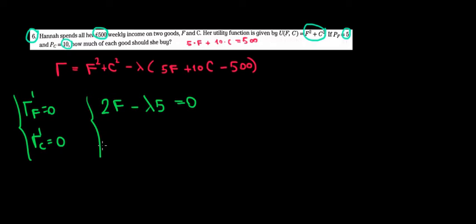Now the same with respect to clothing. F squared is a constant, so that's zero. C to the power two derivative becomes 2C minus Lambda times 10 equals zero.